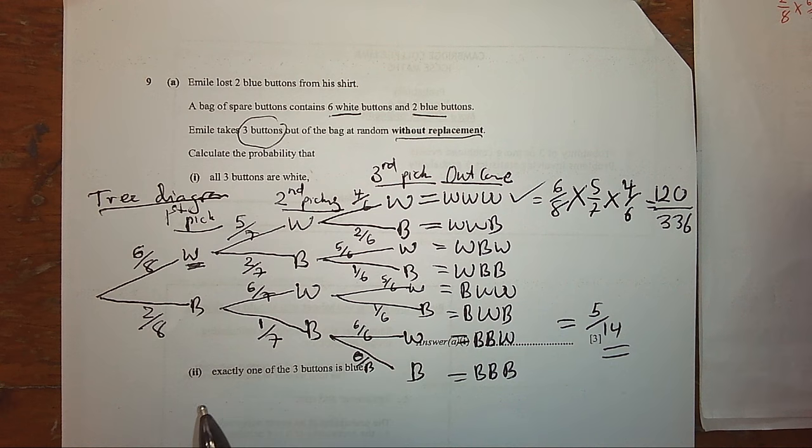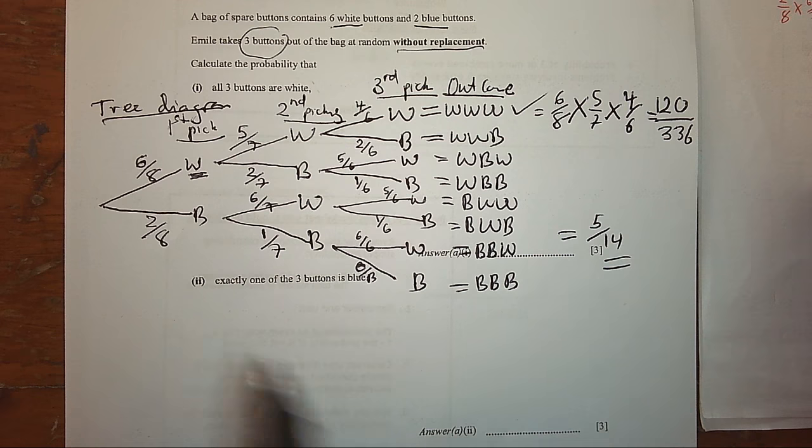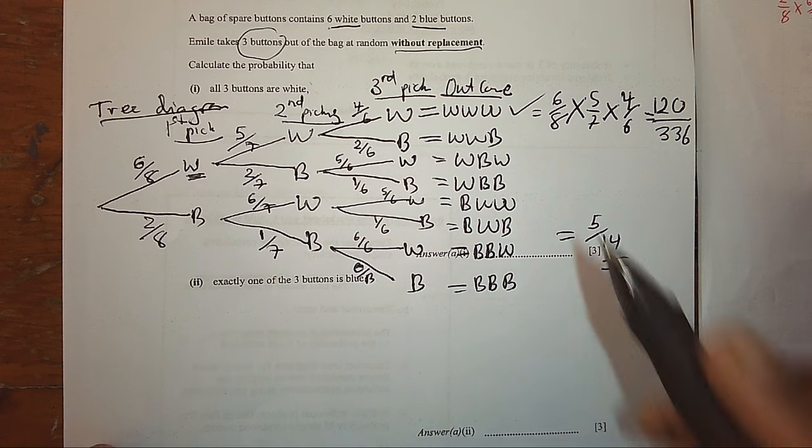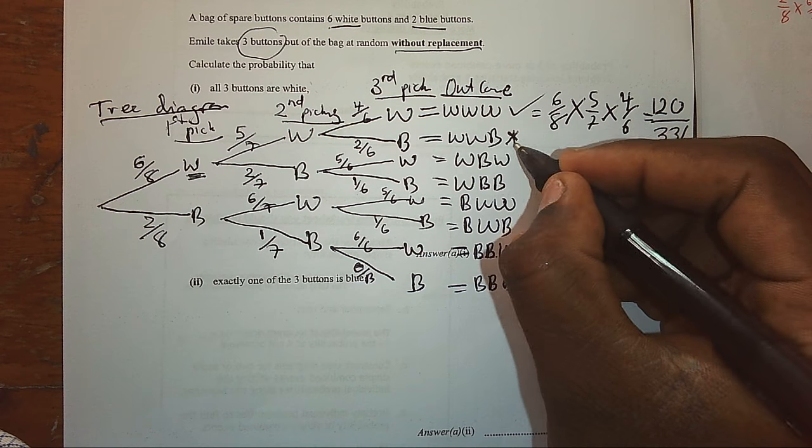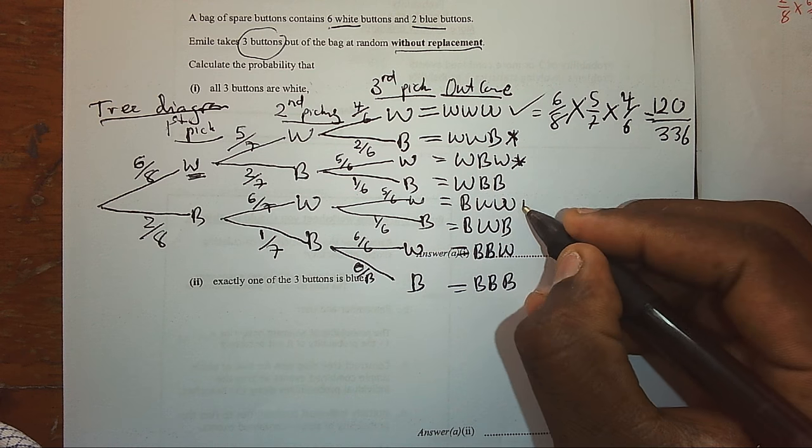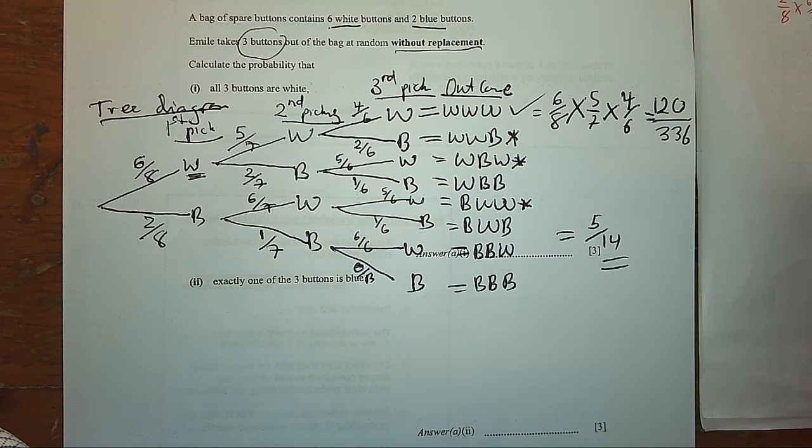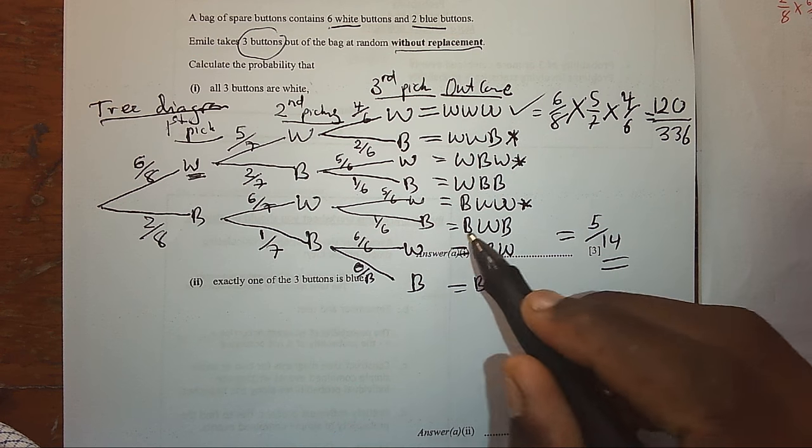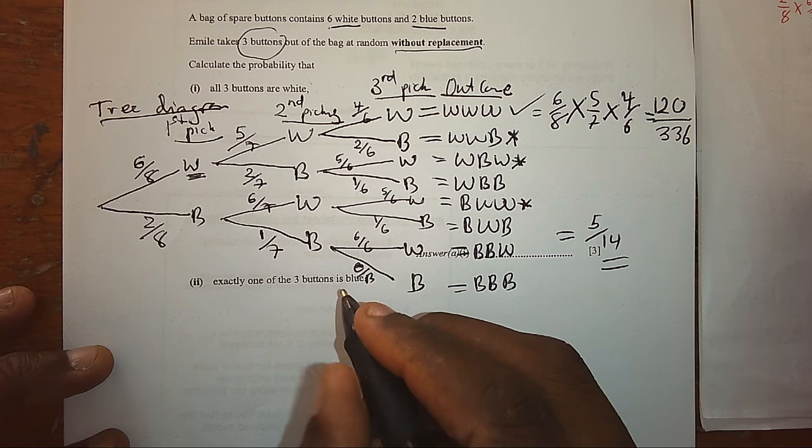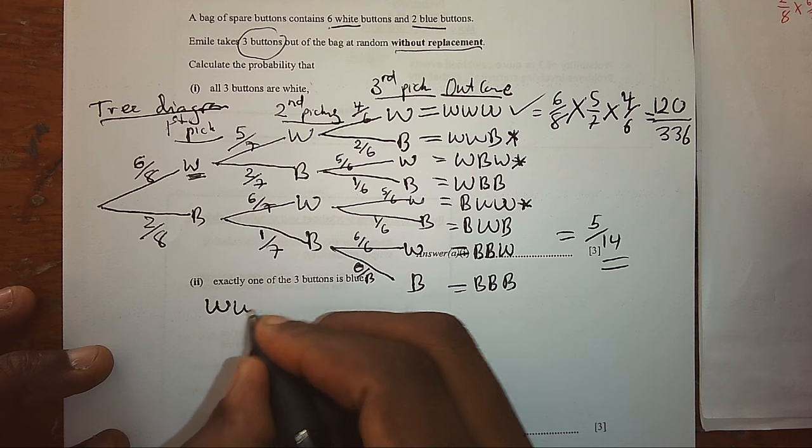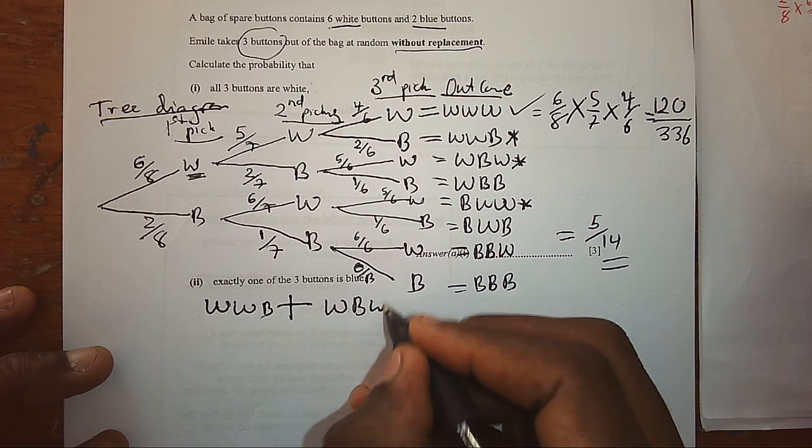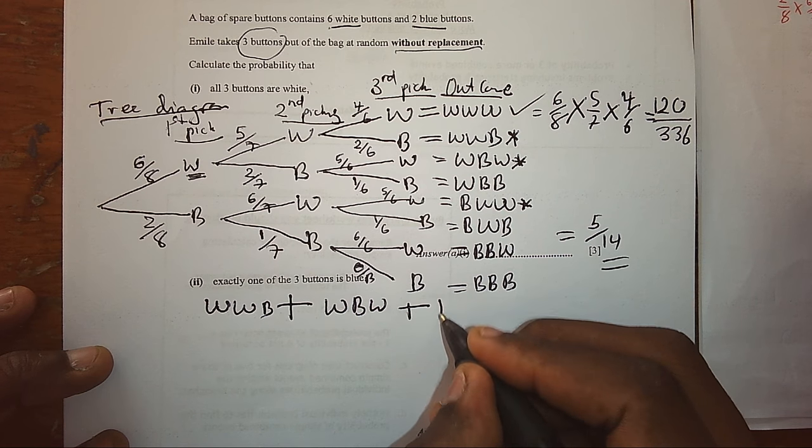On the second part, we are asked exactly one of the three buttons is blue. Now, let's look at this together. If we look at this part here, we have exactly one is blue. If we look at this option here, we have exactly one is blue. And that one, we have exactly one blue. For the others, we will not have one blue. We are either two blue, or none. Therefore, our possible outcomes here, having only one blue, could be white, white and blue. Or, white, blue, white. Or, blue, white, white.